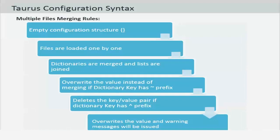It's also important to understand which rules Taurus uses in order to merge multiple configuration files into a single file at the time of execution. Typically the process will start with an empty configuration structure surrounded by curly brackets, and the files are loaded one by one in the order in which they've been placed in the BZT command. Every file must contain a dictionary either in YAML or JSON format.